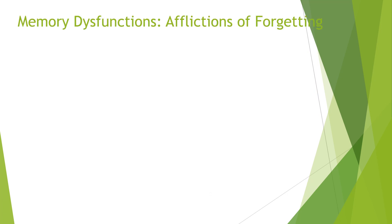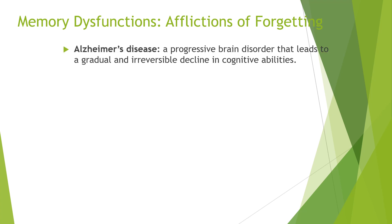The last slide in this module and chapter looks at memory dysfunctions — afflictions of forgetting. These are disorders in which memory loss is one of the major symptoms. The first is Alzheimer's disease, a progressive brain disorder that leads to a gradual and irreversible decline in cognitive abilities. It is the fourth leading cause of death among adults in the United States, and one of the first symptoms is memory loss.